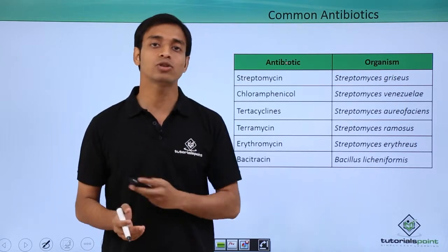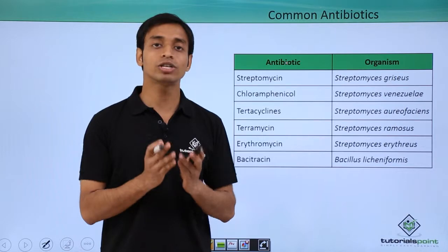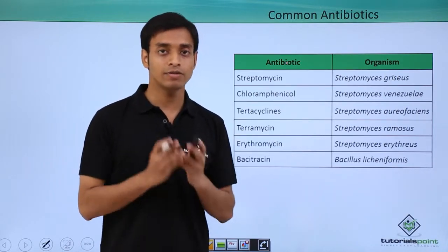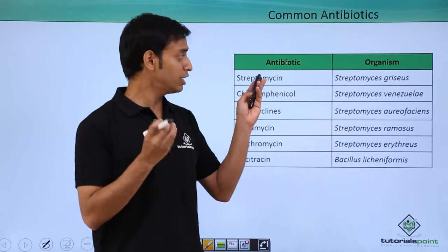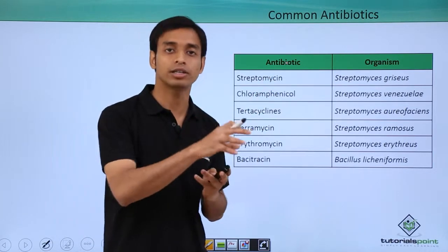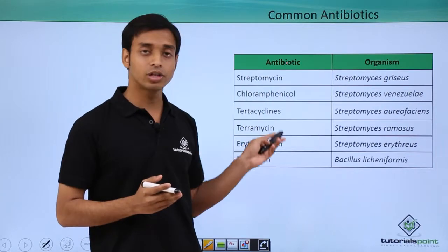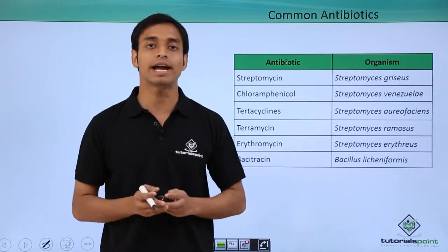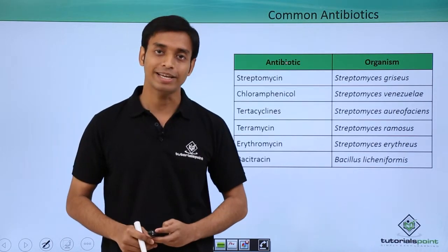In this video we have talked about a useful product of kingdom Monera or bacteria, which is antibiotics — compounds produced in very low concentrations in order to resist the growth of other organisms. We have also discussed some of the common types of antibiotics and the organisms which produce them. I hope you have understood and liked this video. Thank you.